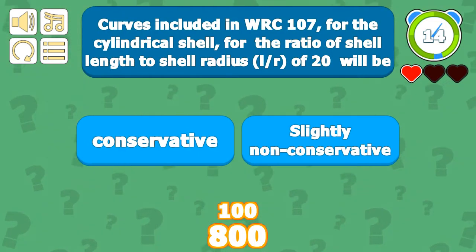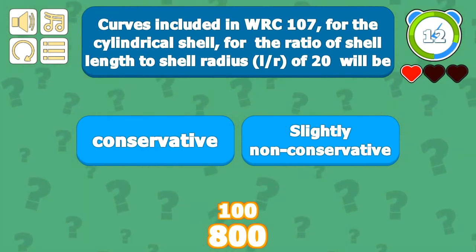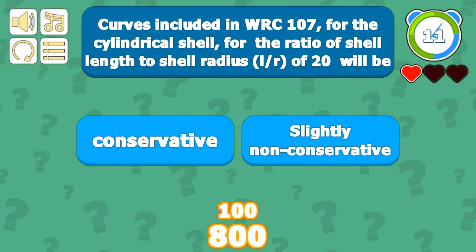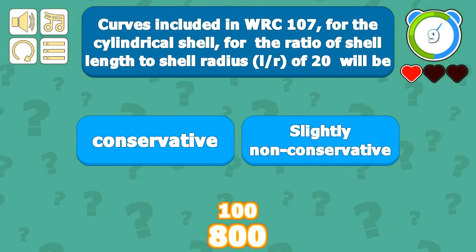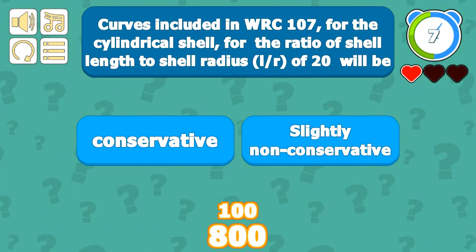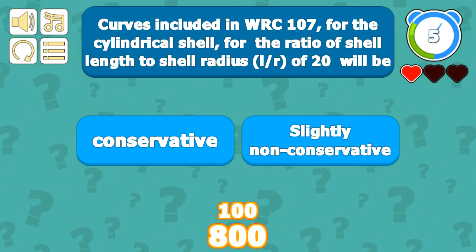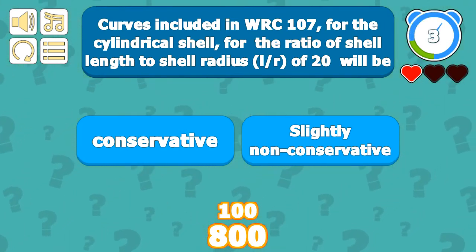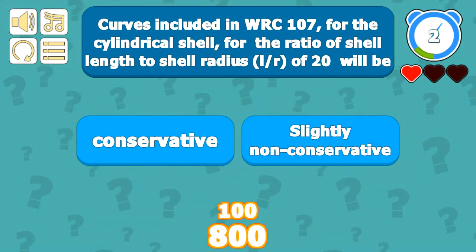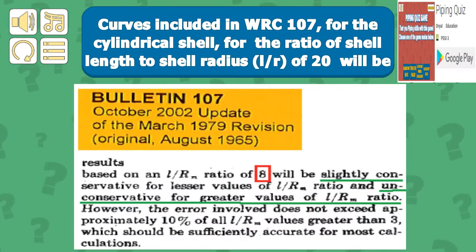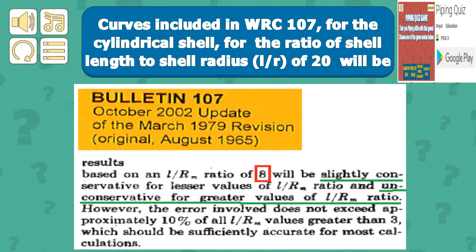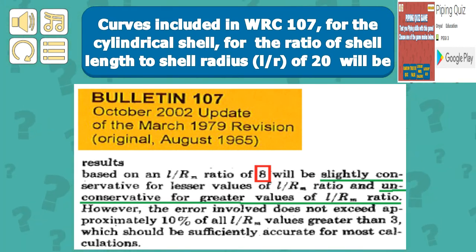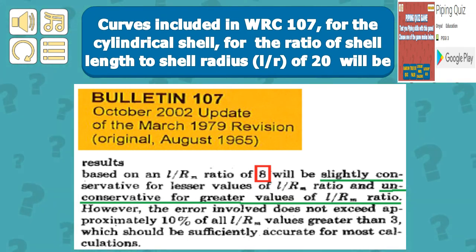For a cylindrical shell with shell length to shell radius ratio of 20, the results will be slightly non-conservative. The bulletin states: 'However, the error involved does not exceed approximately 10% for L/R values greater than 3, which should be sufficiently accurate for most calculations.'